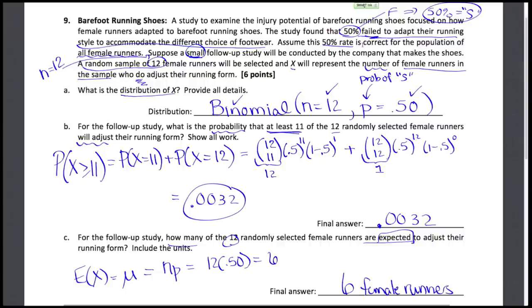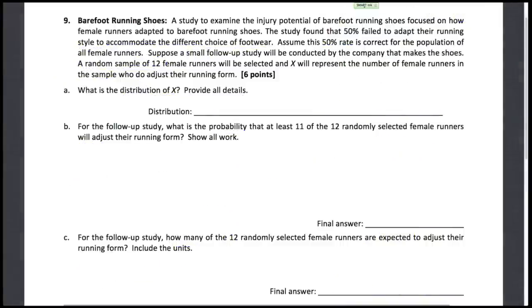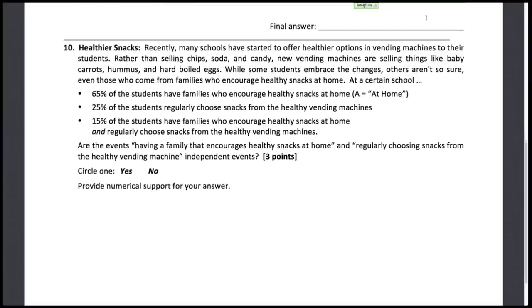Now we're not asked to give the symbol or units here, but we would have at least the value of 6 on our final answer line. Had our sample size been 11 instead of 12, then half of 11 isn't a whole number, it's 5.5. We would have still put just 5.5 on the final answer line, but here it happens to turn out to be a whole number. Let's take a look at our next question on this page, question number 10.